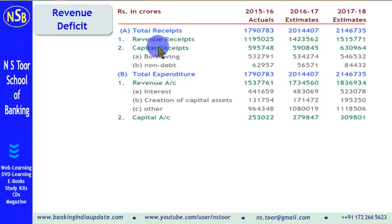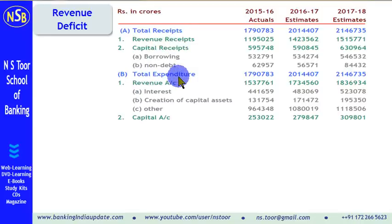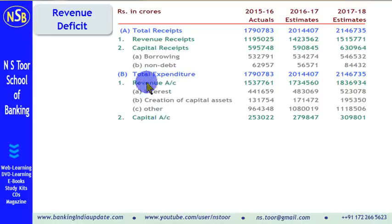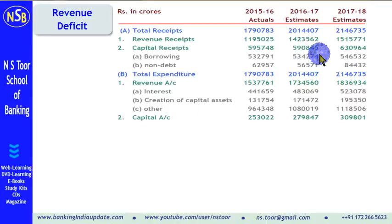Receipts have been segregated into two parts: revenue receipts and capital receipts. Similarly, expenditure has been segregated into two parts: revenue expenditure and capital expenditure. Revenue expenditure has further been segregated into different categories. This information will be required to calculate revenue deficit and effective revenue deficit.